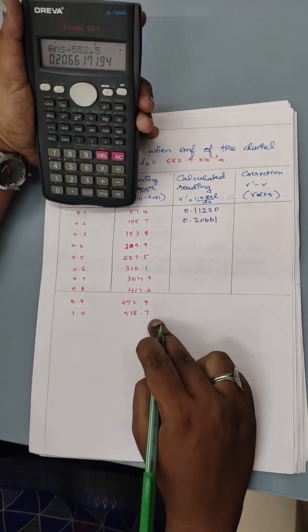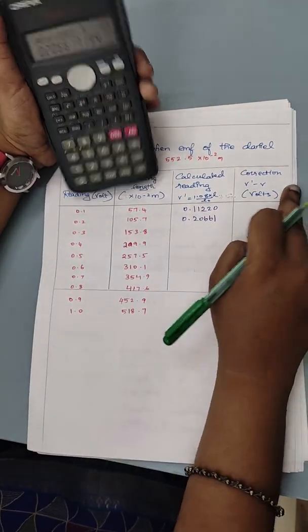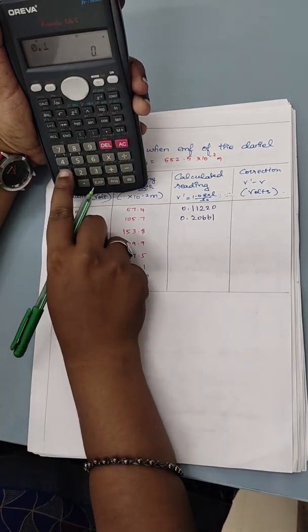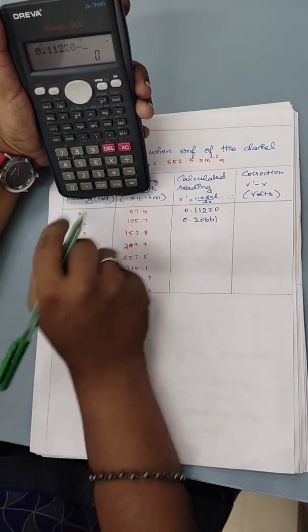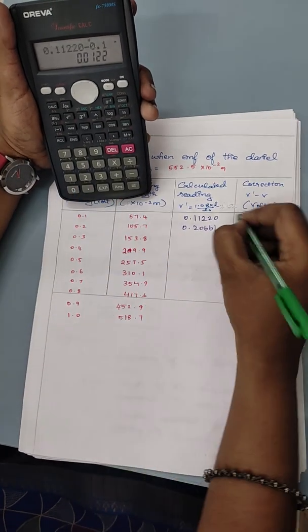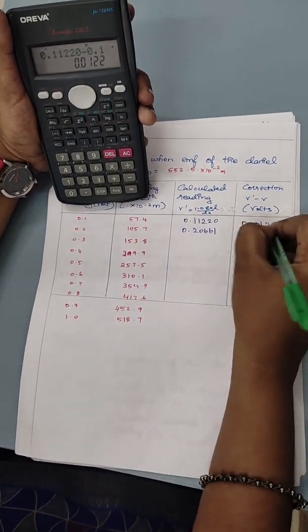So likewise we need to do for all this. Then find out V dash minus V. This is V dash and this is V. 0.11220 minus 0.1. So it gives out 0.01220.